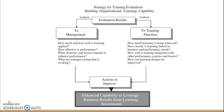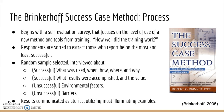Here we have a flow map that reviews the process. It all starts with the results at the top. The feedback from the trainees goes to management and trainers for different purposes. Management is looking at the bottom line, while trainers are looking at how the training is linked to needs and integration. Both management and trainers are then looking at where we can improve, leading to the outcome of enhanced capability to leverage business results from learning investments. This process uses a self-evaluation survey that focuses on the level of new methods and tools from training. Basically, trainees are answering the question: how well did the training work?